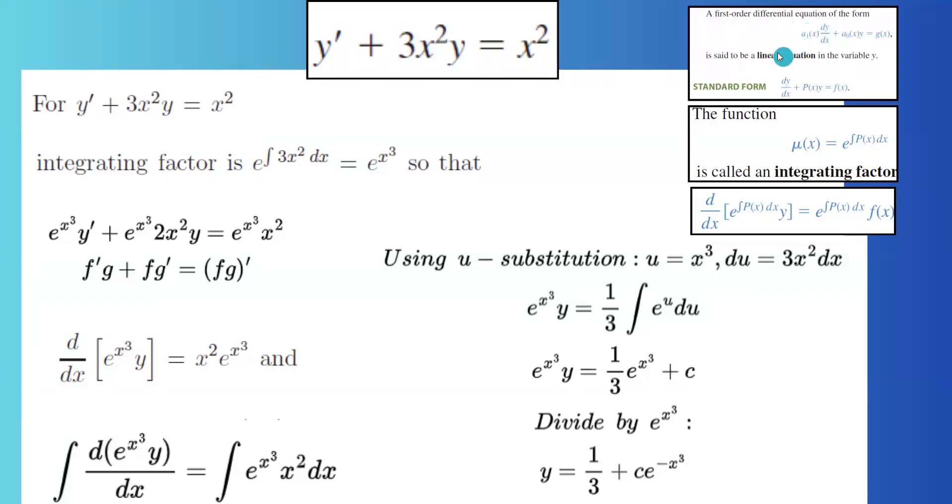Dividing everything by the leading term gives you a standard form. Then you can find the integrating factor, multiply everything by the integrating factor, and then take the integral.